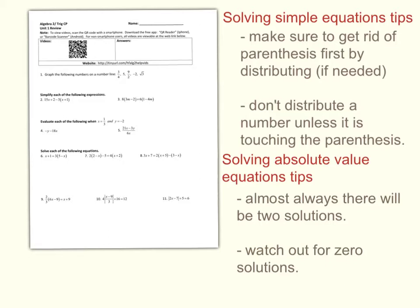The second tip: do not distribute a number unless it is touching the parentheses. For example, with 2 minus (3 plus x), students often make the mistake of distributing the 2. You don't want to distribute the 2 — just distribute the negative. So you get 2 minus 3 minus x, and from there you can combine your like terms. Once you distribute the negative, you're done with the parentheses. It's a common error I see students making.